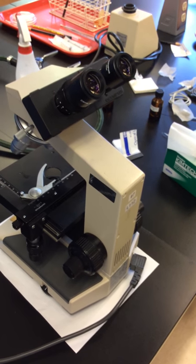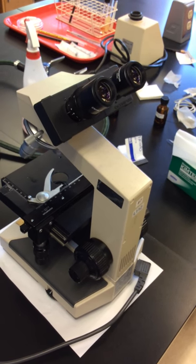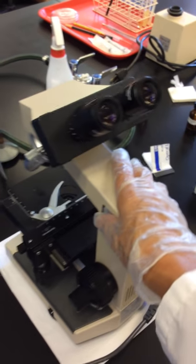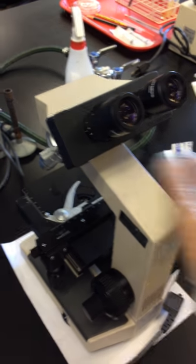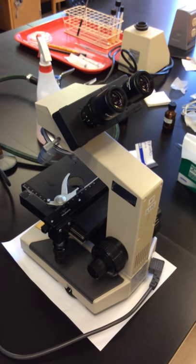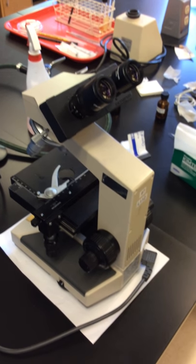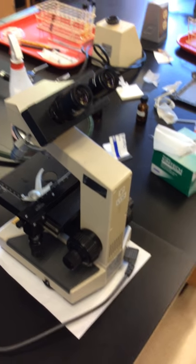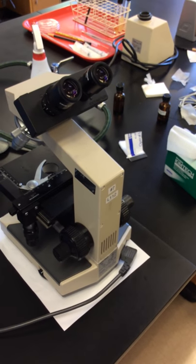Returning the microscope to the cabinet, you always want to use a two-hand carry. You're going to grasp the arm with one hand and support the base by placing your other hand beneath the base. You want to hold it close to your body. Because sometimes the lab is crowded, it actually helps to hold your elbows inward. It makes it less likely that you're going to bump into somebody.